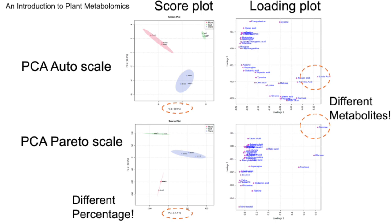Scaling is a critical preprocessing step in multivariate analysis that can substantially affect the outcomes. The application of different scaling methods can lead to vastly different results, as is particularly apparent in the loading plots derived from PCA, where the prominence of certain metabolites can vary depending on the scaling technique used. The corresponding loading plot may highlight different metabolites as significant, underscoring the need for careful consideration when choosing a scaling method to ensure accurate biological interpretation.